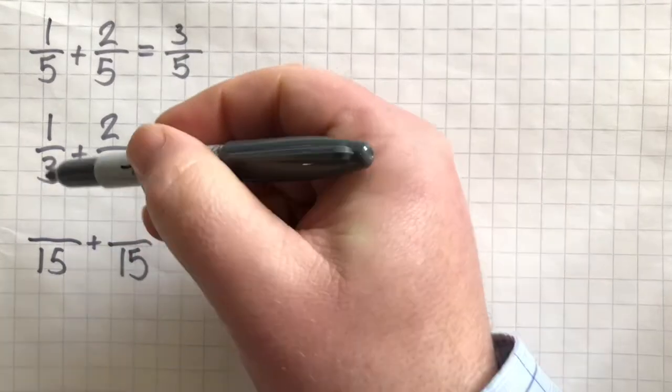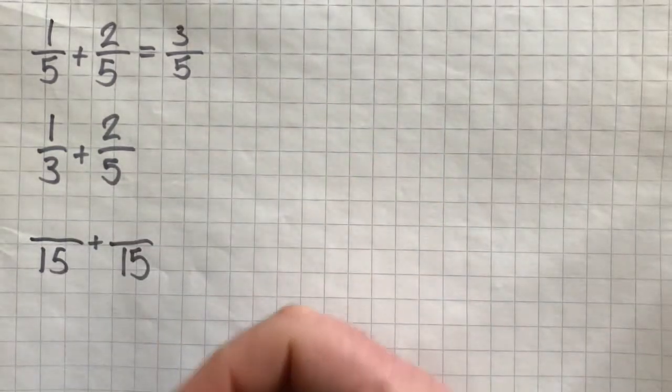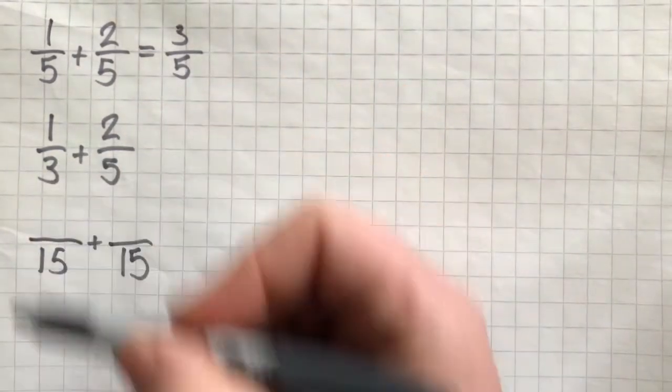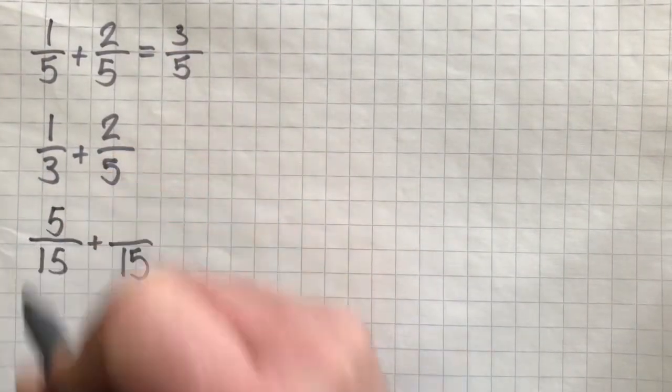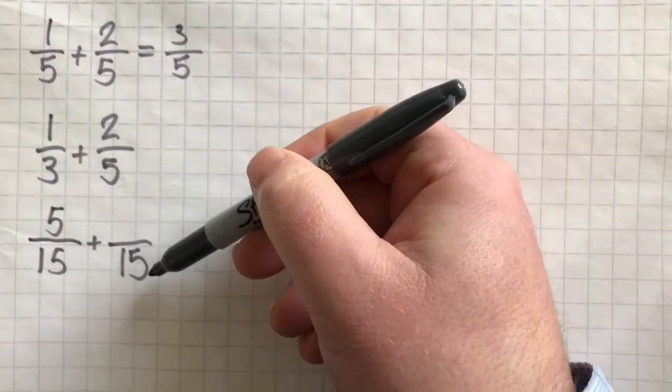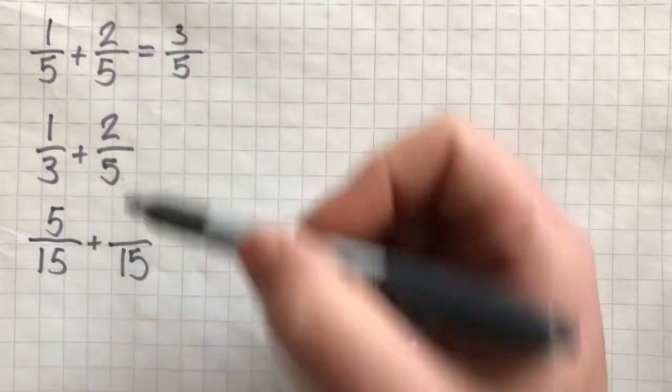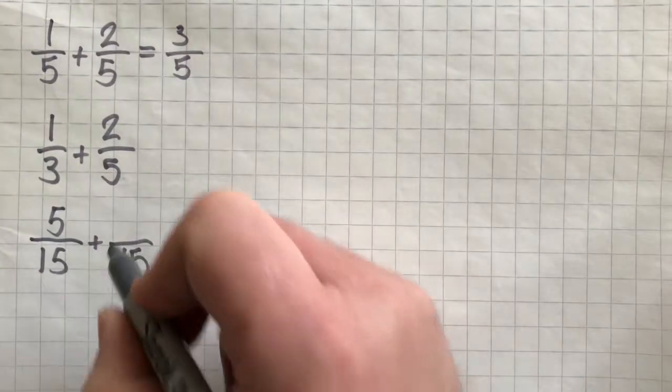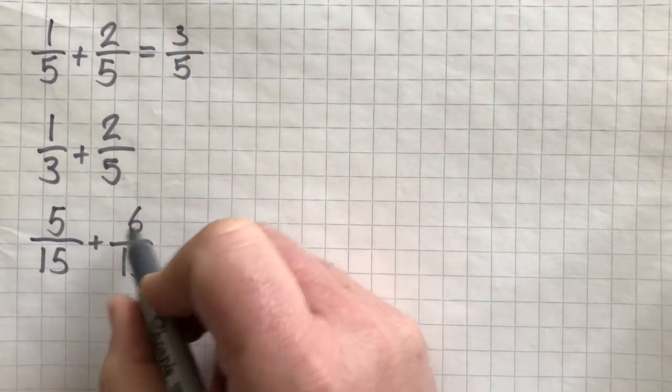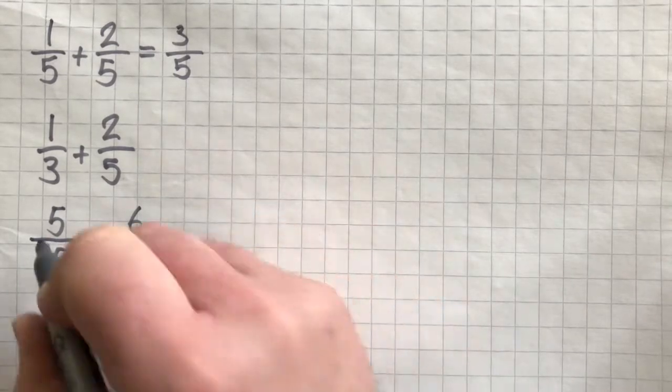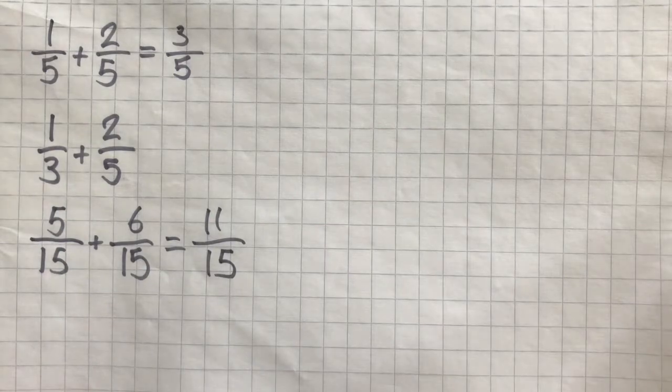So, we need to change, using our knowledge of equivalent fractions, 1 third into 15ths. To do this, 3 times 5 is 15, so 1 times 5 is 5. Do the same for 2 fifths to change it to 15ths. 5 times 3 is 15, so 2 times 3 is 6. Now, we have the same denominator, so we can add the numerators together and we get 11 over 15.